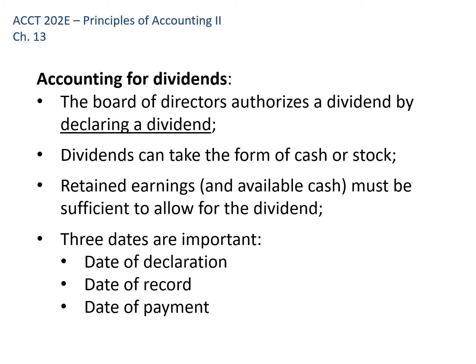The first is the date of declaration — that's when the board authorizes the dividend. The second is the date of record. On the date of declaration, we say we're going to pay a dividend of a dollar per share to all shareholders as of a future date, say August 1st. That's the date of record — we take a snapshot of who owns the stock on August 1st; that's who gets the check. The third is the date of payment, when we actually mail the checks to shareholders.